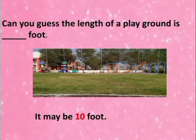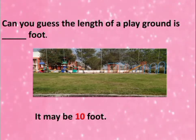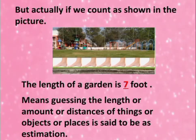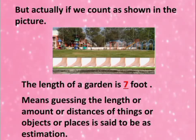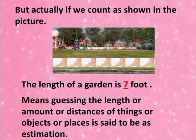Can you guess the length of a playground? See here in the picture — this is a playground. Can you guess the length of the playground in cubits? It may be 10 cubits. But actually, if we count as shown in the picture: 1, 2, 3, 4, 5, 6 and 7 — it means the length of the playground is 7 cubits. So, guessing the length, amount, or distances of things, objects, or places is said to be estimation.